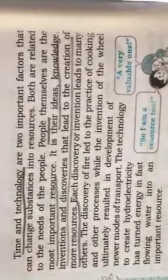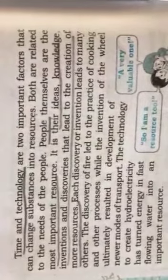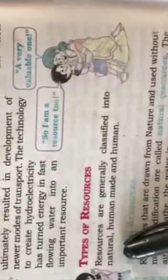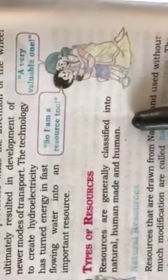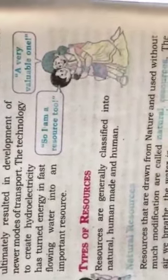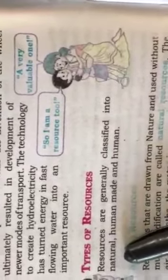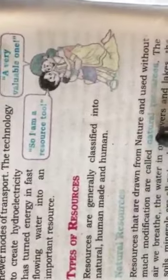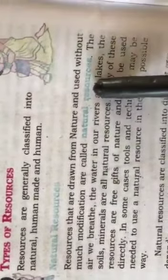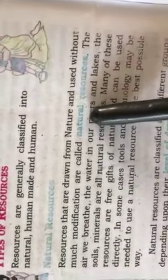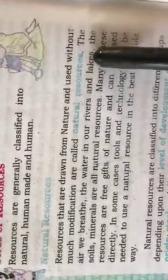Our next topic is types of resources. Resources are classified as natural, human-made, and human. These are the three classifications of resources, and they are further classified into different sections. Natural resources are those drawn from nature and used without much modification. The resources which we get easily through nature are called natural resources.